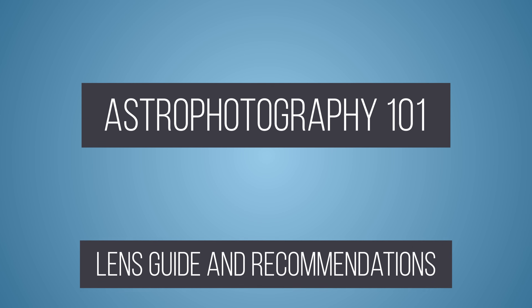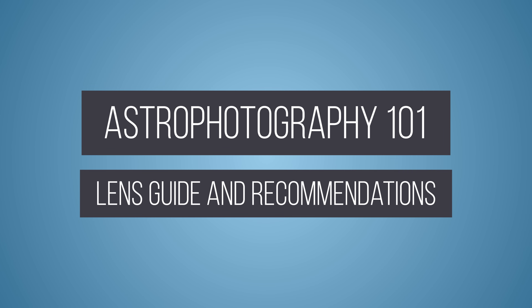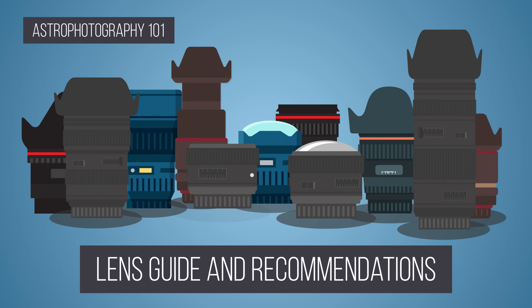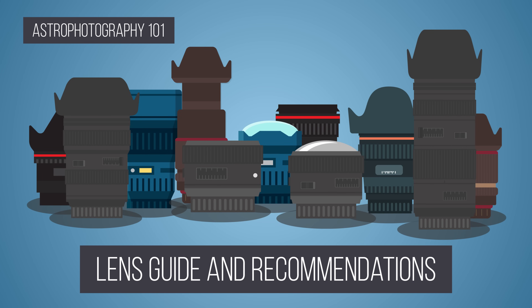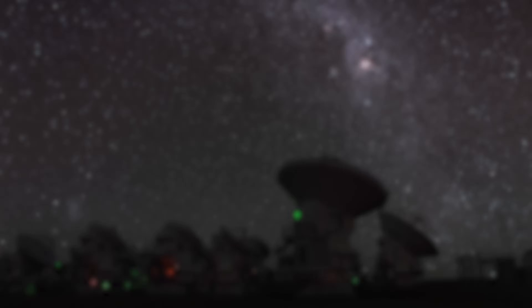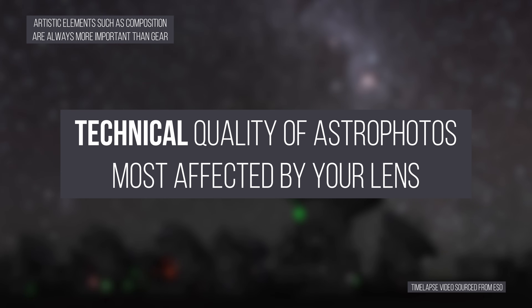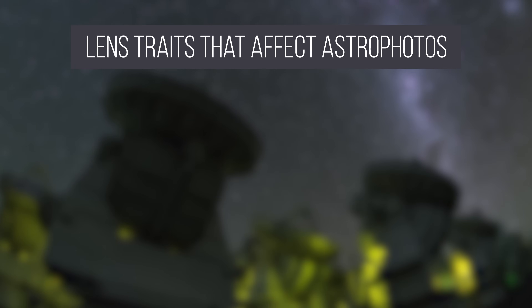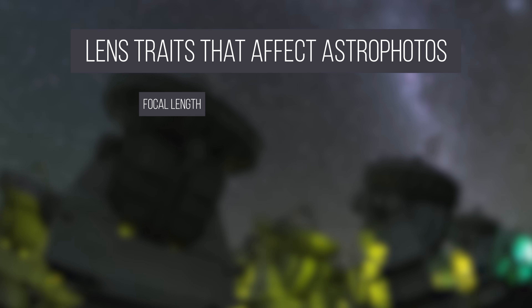Welcome back to Astrophotography 101. Let's talk about lenses. Unlike a lot of photographic genres, in astrophotography the image quality of your photos will be dependent mostly on the lens that you use. There are two basic traits of a lens that will affect how to take your astrophotos: focal length and aperture size.